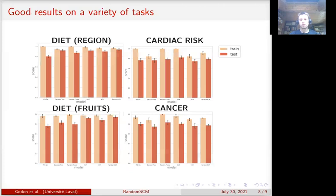Similar results were obtained on other datasets, where the task was either to predict diet, cardiac risk or cancer phenotype.